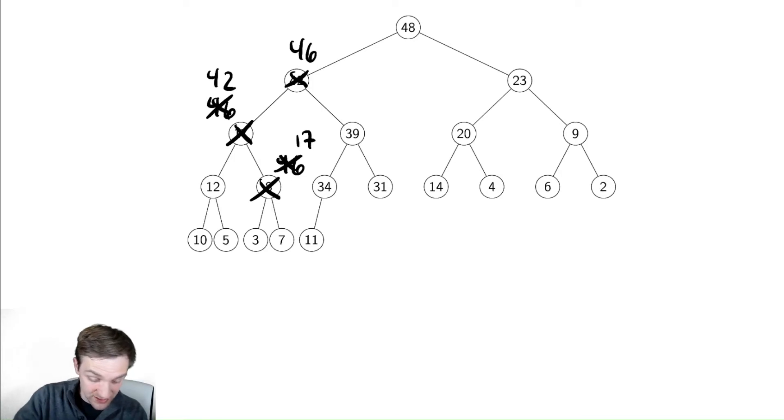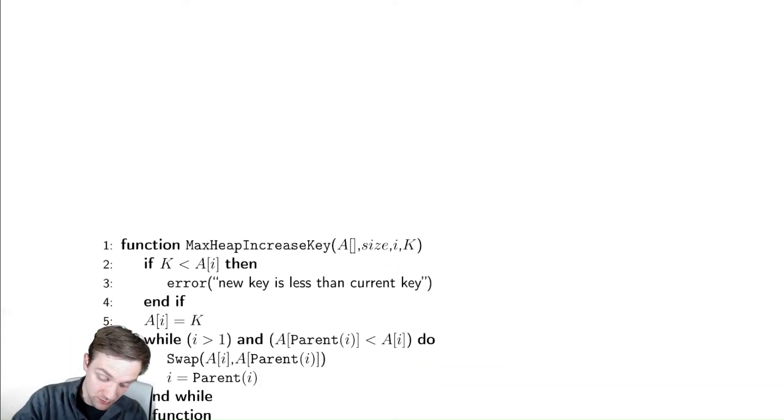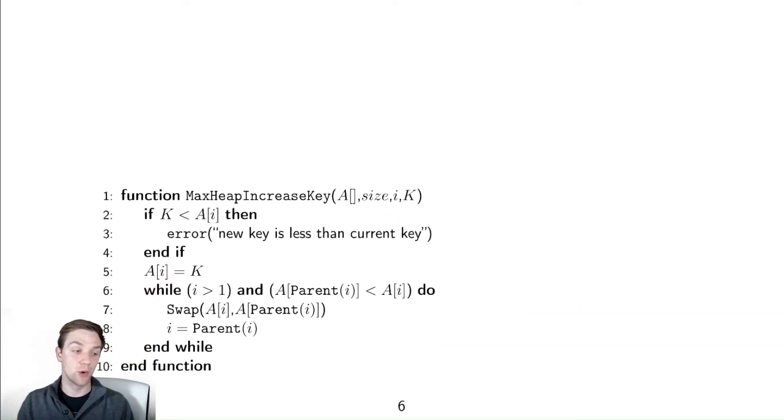Let's look at the code for this. The code for this is down here with what's called increase key. We're going to increase the value at a location in the heap.